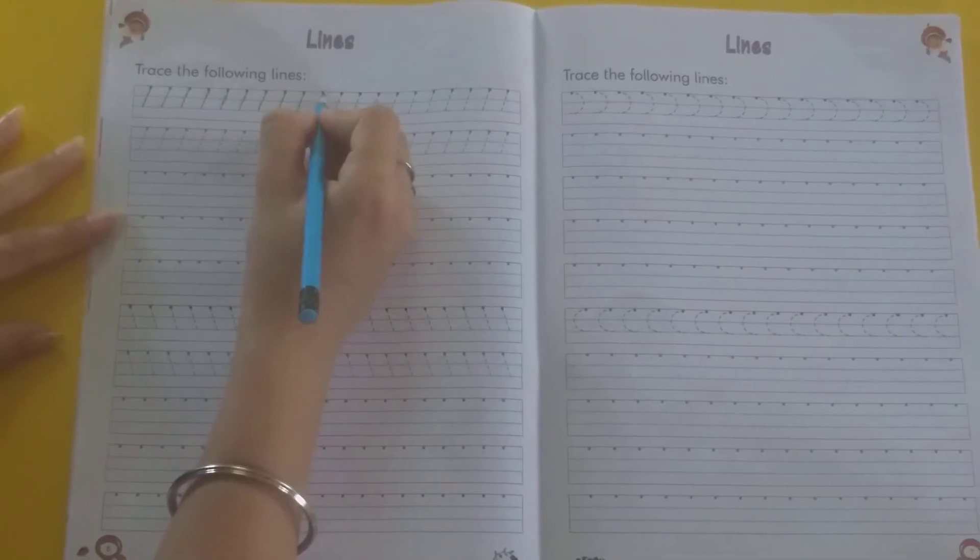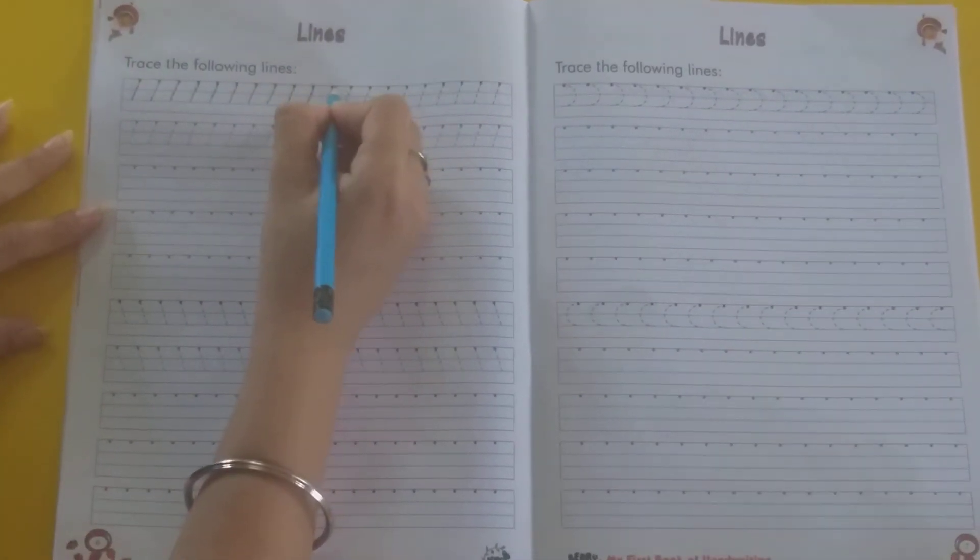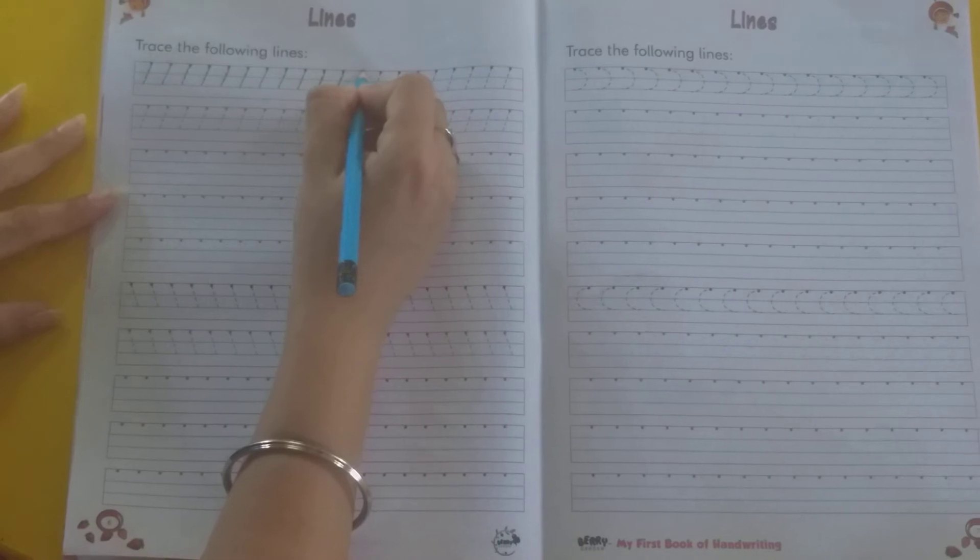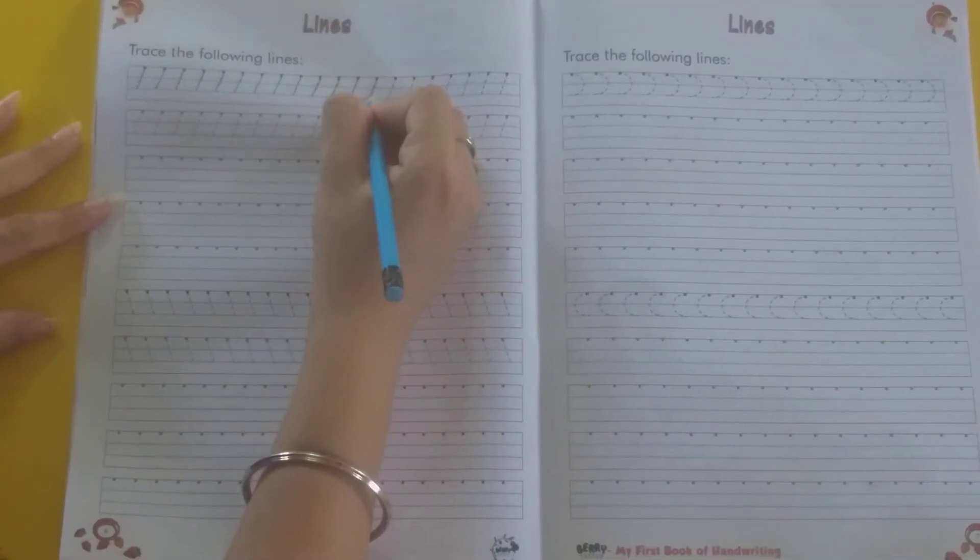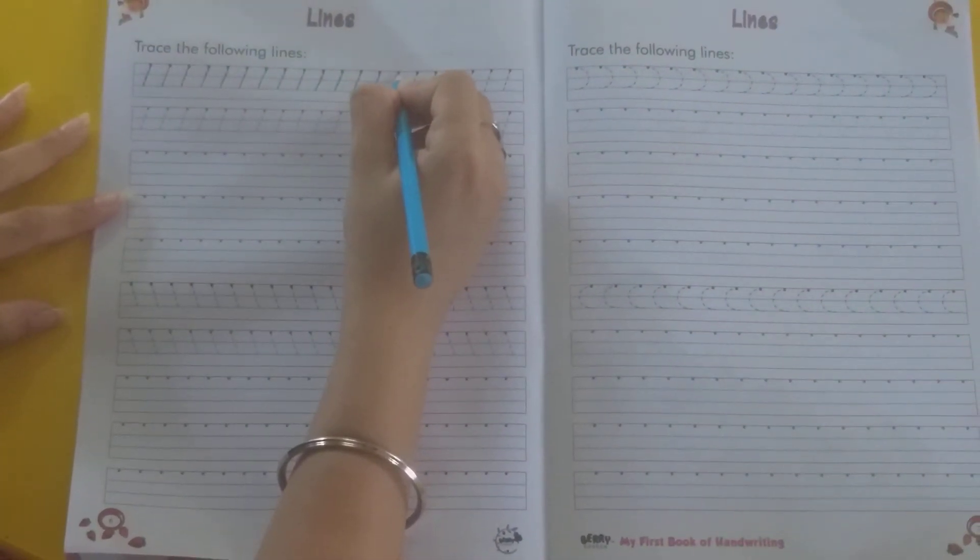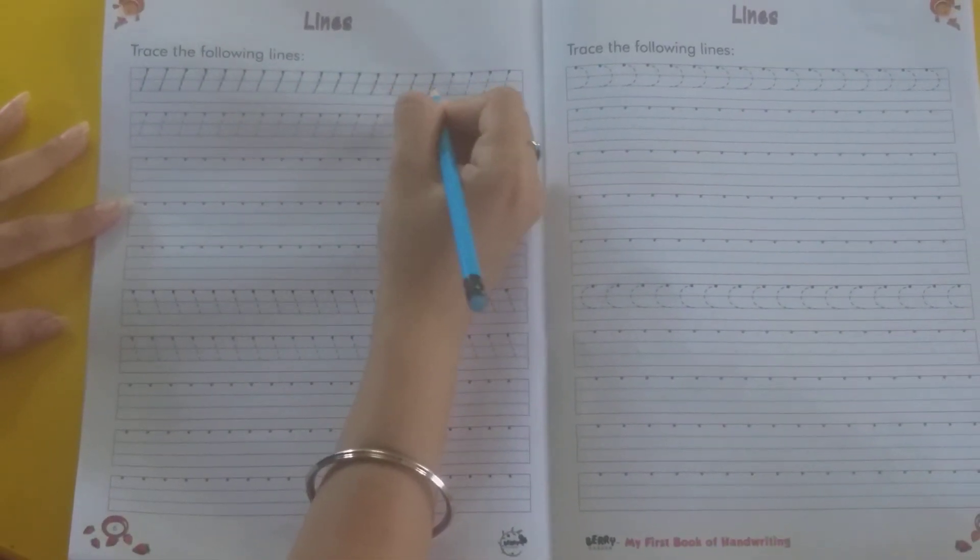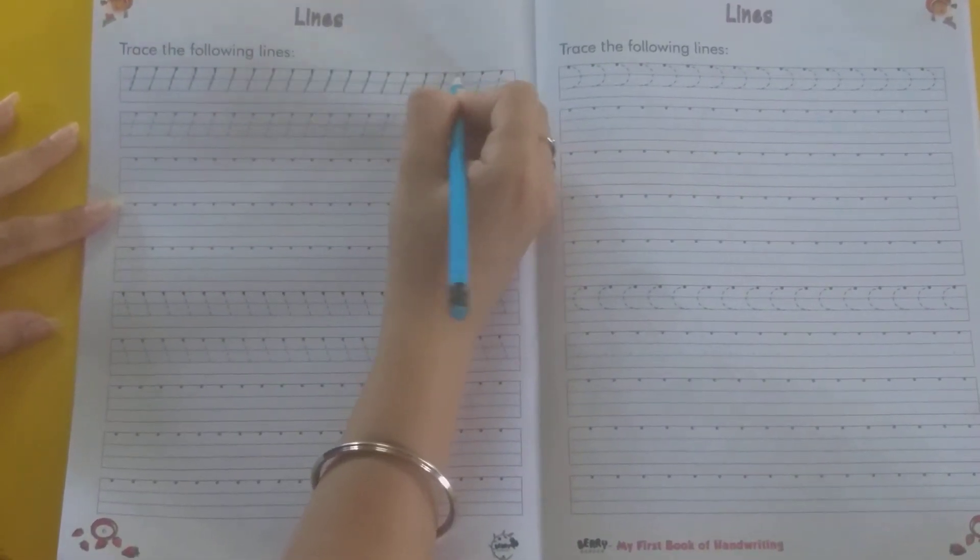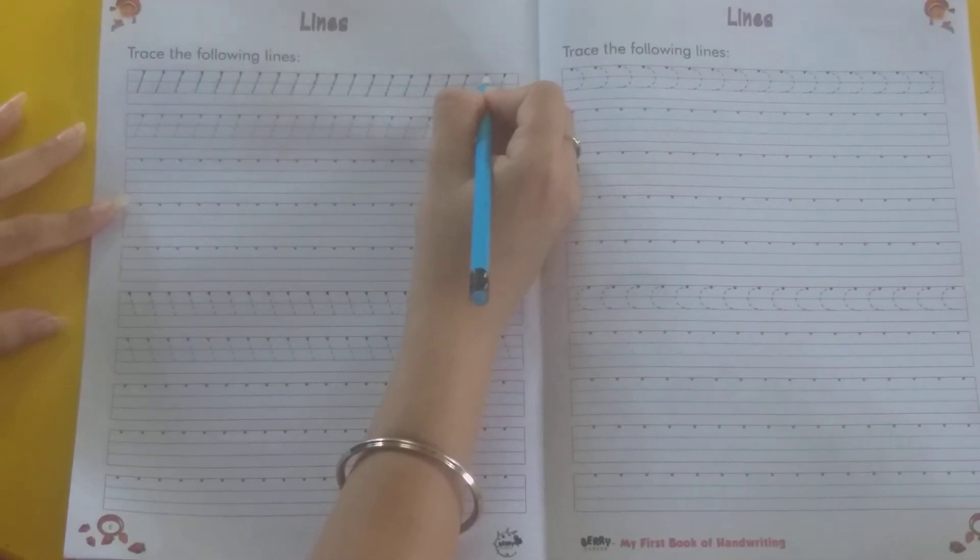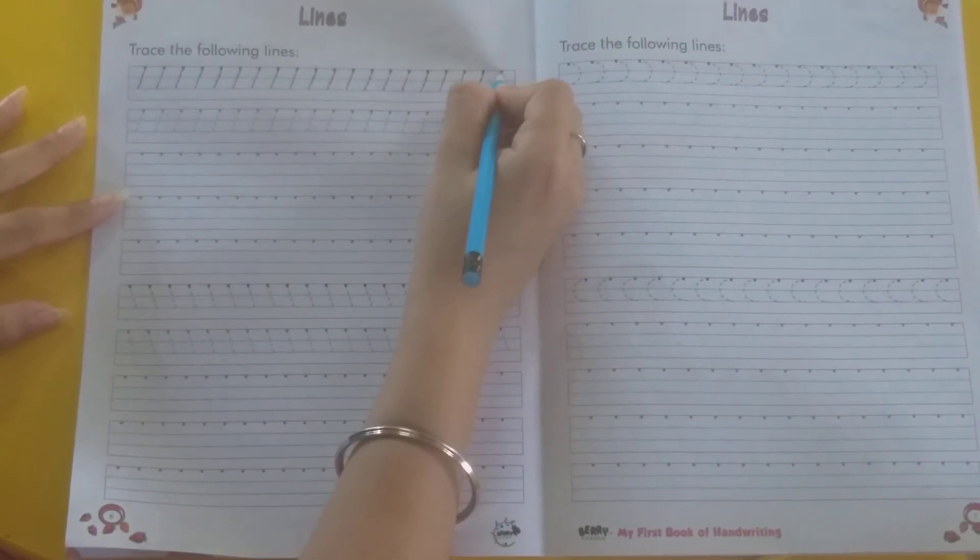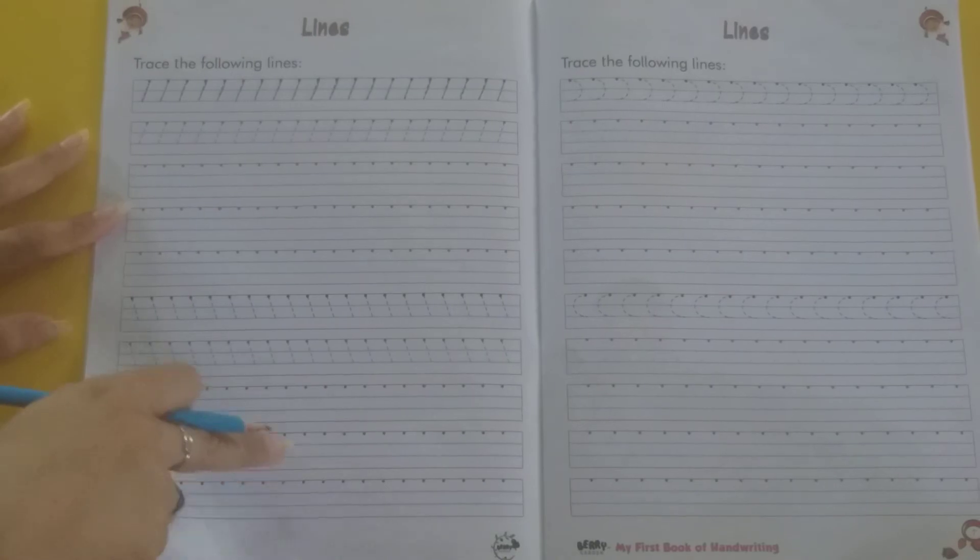Yaad hai ki nahi bachcha aapko. Right to left. Ma'am ye ek line complete kar rahi hai. Baqi aap karoge. Now this is your fun work.